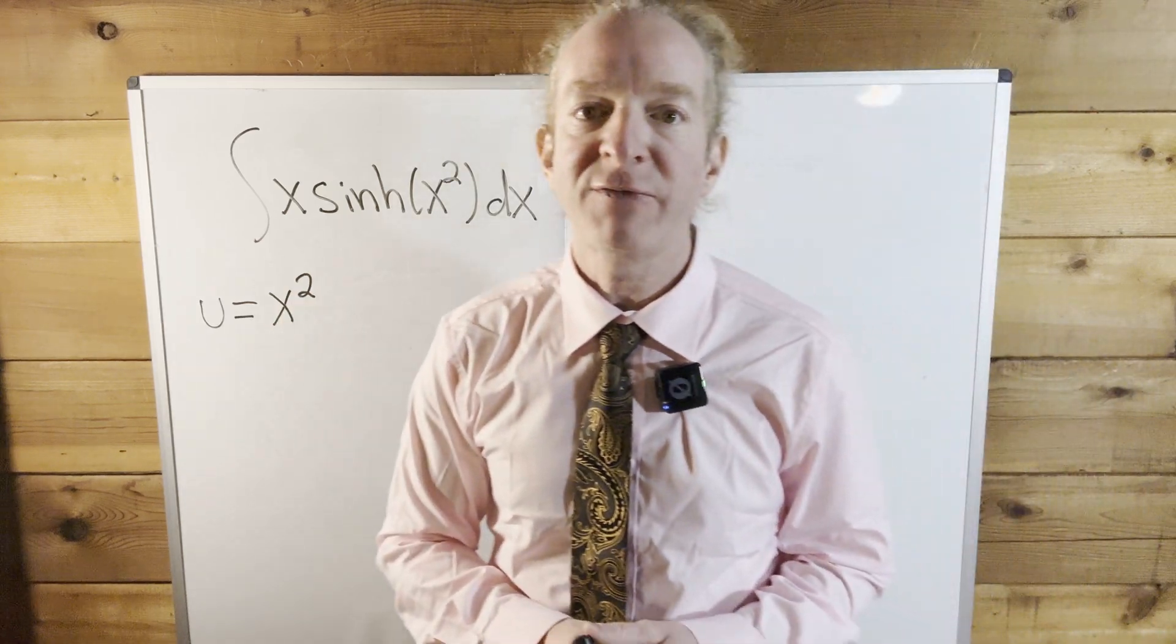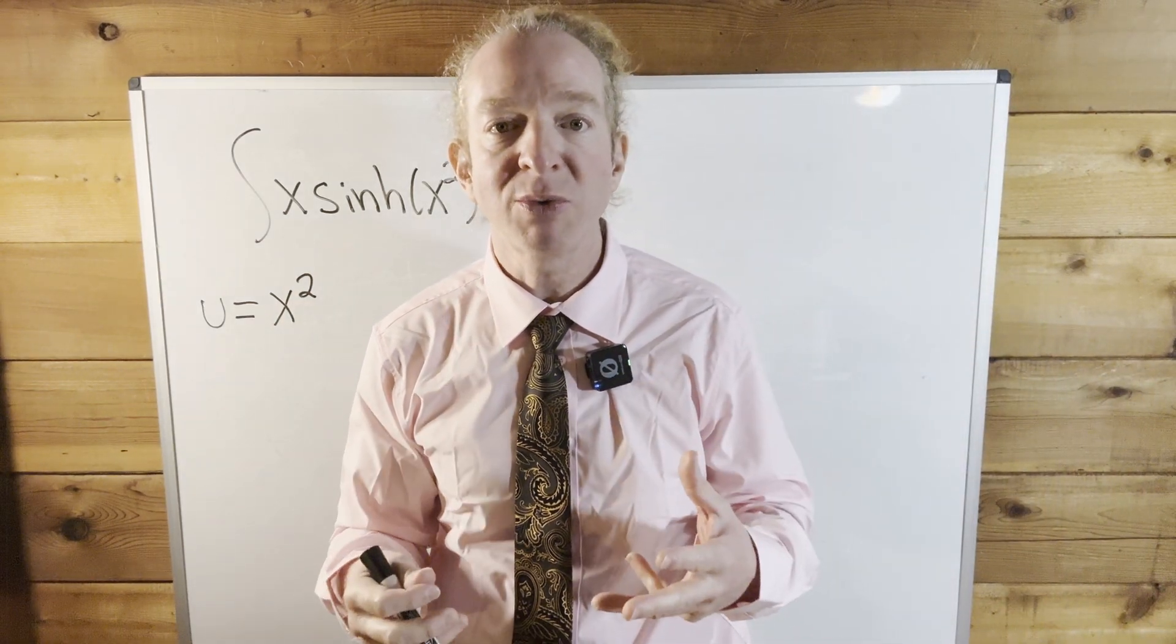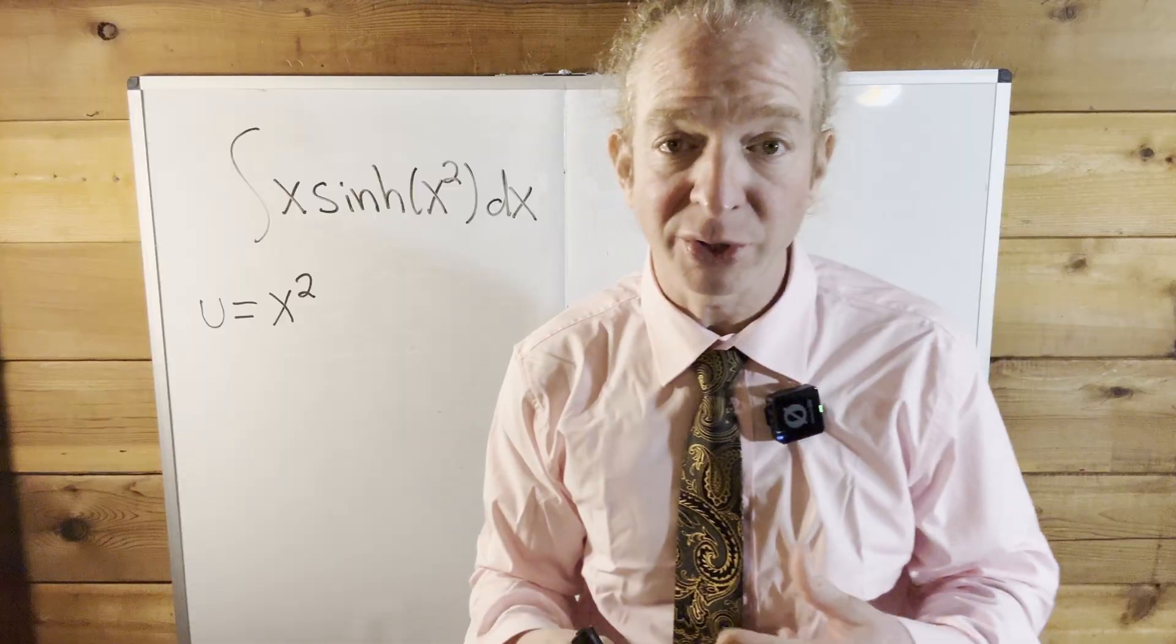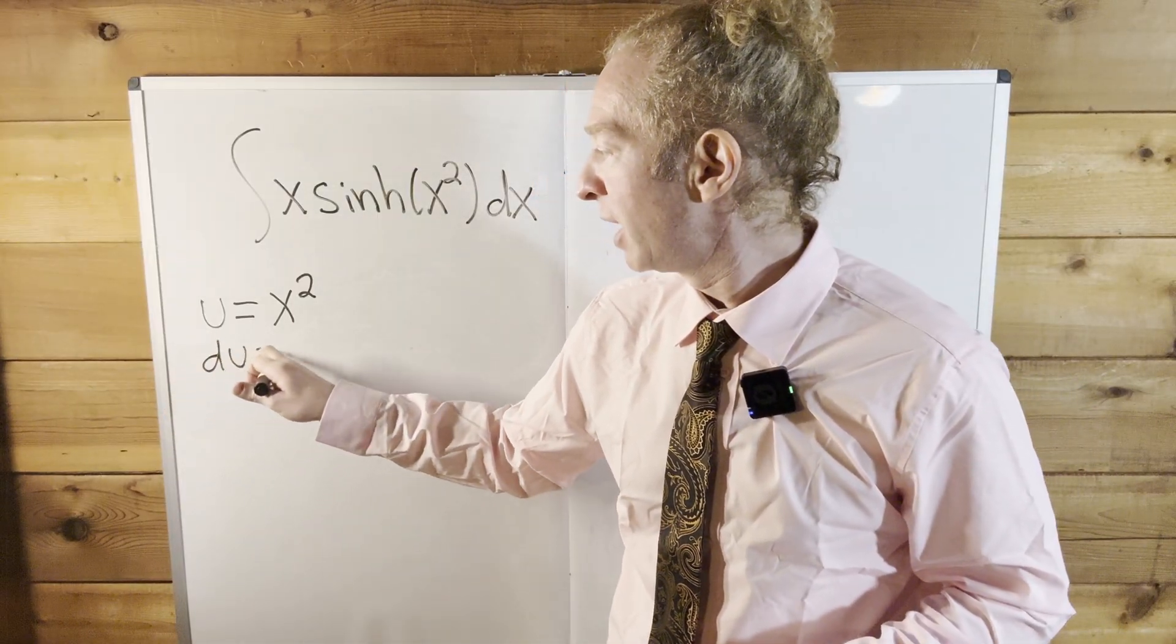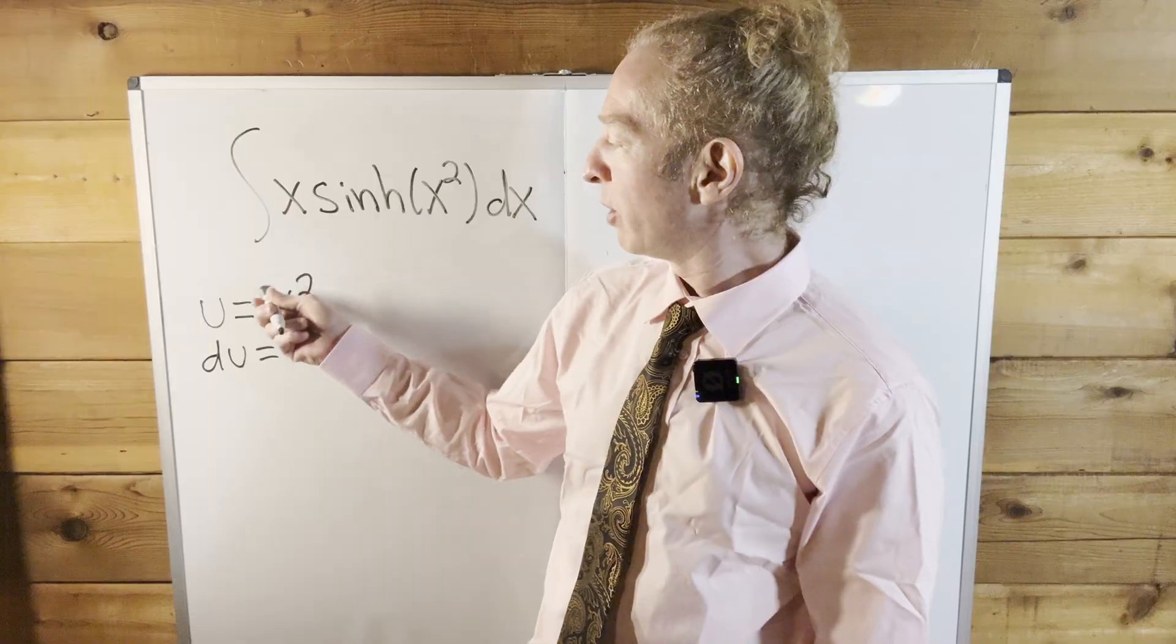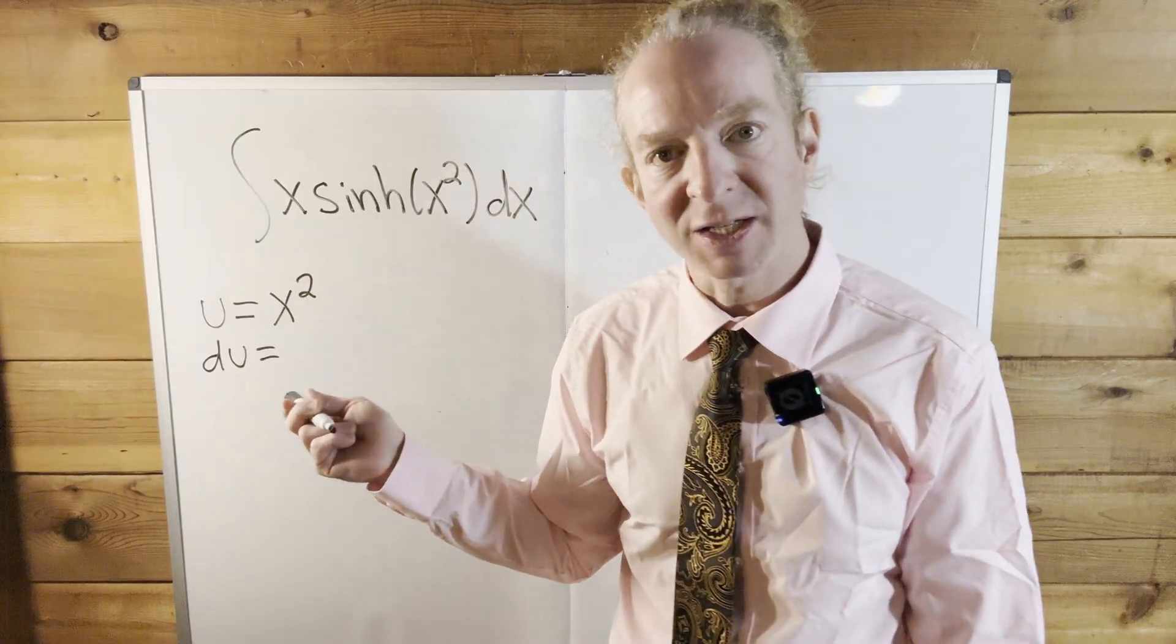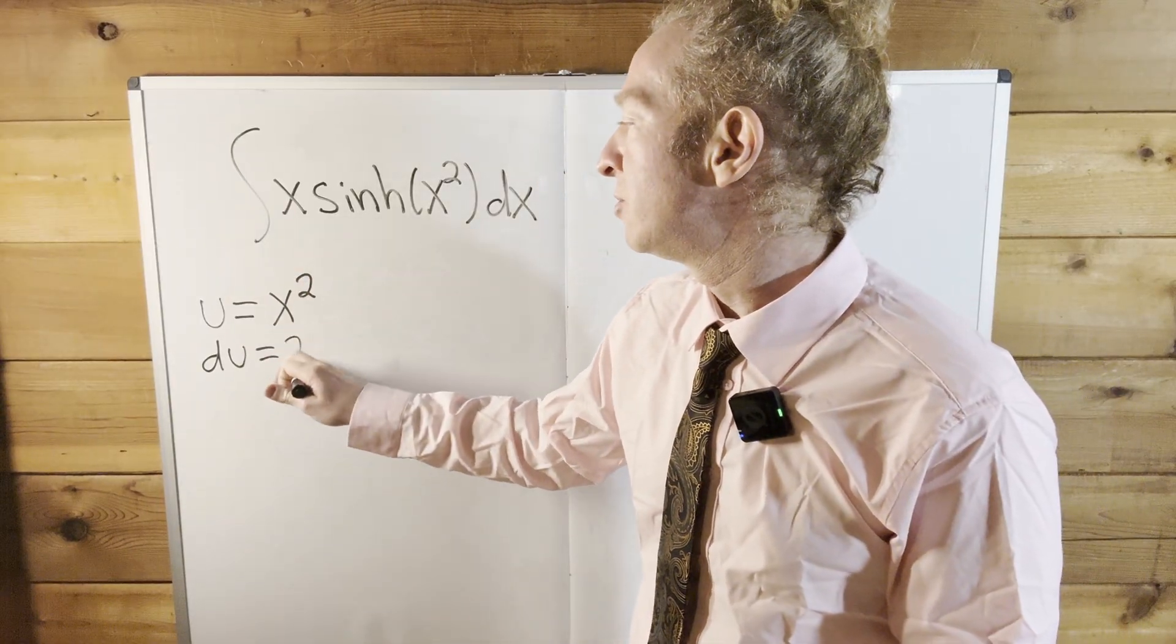Now we're going to take the derivative of both sides using what's called differential notation. So the derivative here is simply du. And then this is the power rule - we bring down the 2 and subtract 1 from the exponent, so it's 2x dx.